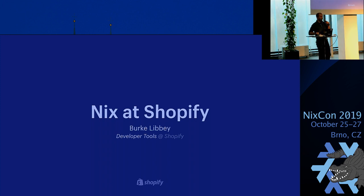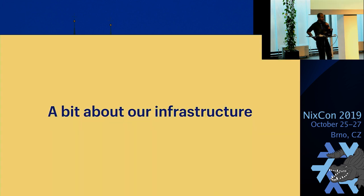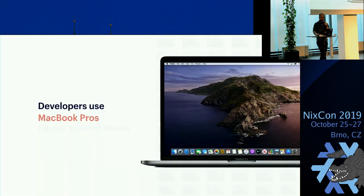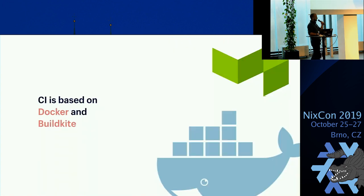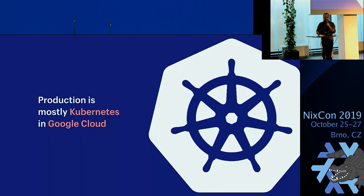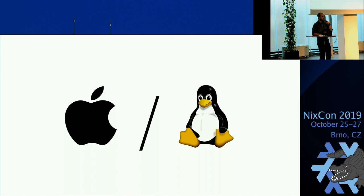I work at Shopify — we're an e-commerce, software-as-a-service company. We have about 6,000 employees and maybe 1,000 to 2,000 of those are developers, so I work on developer tools there. Our developers use MacBook Pros — we have something like 1,000 of them. Our CI is based on Docker and Buildkite, and our production is mostly Kubernetes and Google Cloud. So we're really straddling this world of Darwin and Linux — development happens entirely on Darwin and production is all Linux.